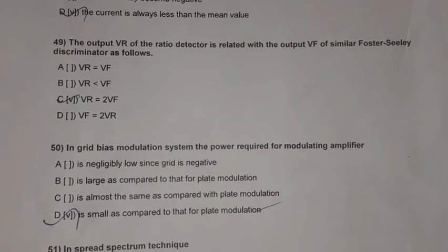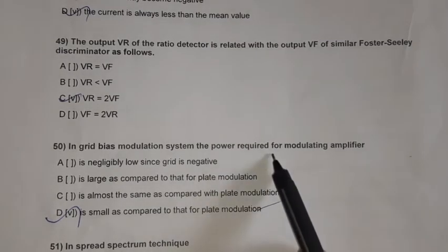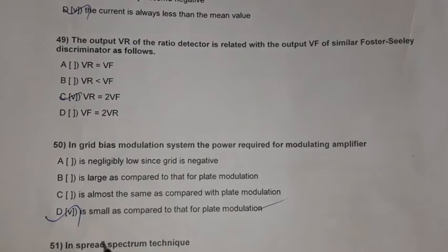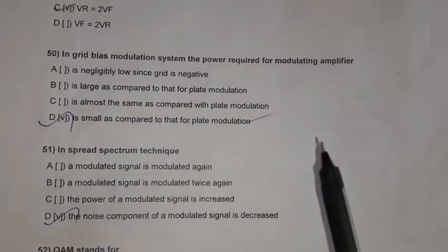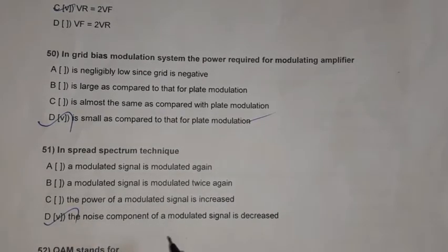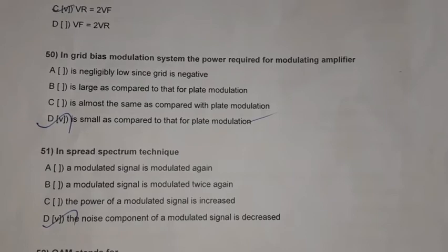Question 50: In a grid bias modulation system, the power required for the modulating amplifier is small as compared to that for plate modulation. Question 51: In spread spectrum technique, the noise component of a modulated signal is decreased.